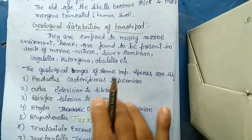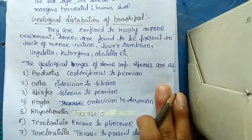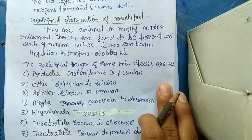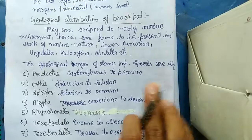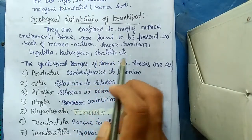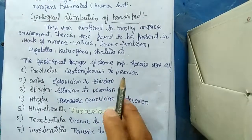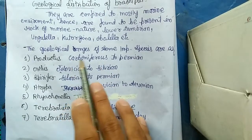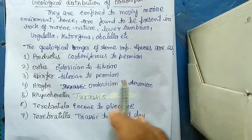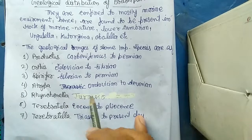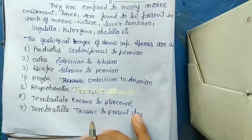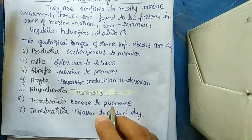Brachiopods are confined to mostly marine environments and are found in rocks of marine nature. In the geological time scale they are seen from the lower Cambrian, with examples such as Lingulella, Kutorgina, and Obolella. Geological ranges of important species: Productus ranges from Carboniferous to Permian; Orthis from Ordovician to Silurian; Spirifer from Silurian to Permian; Atrypa from Ordovician to Devonian; Rhynchoella is only in the Jurassic; Terebratula from Eocene to Pliocene; and Terebratella from Triassic to present.